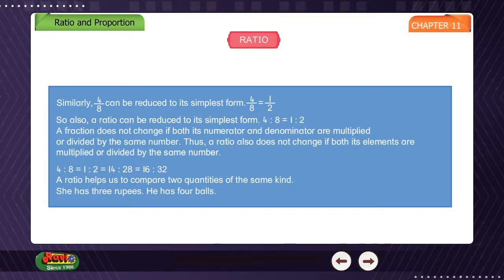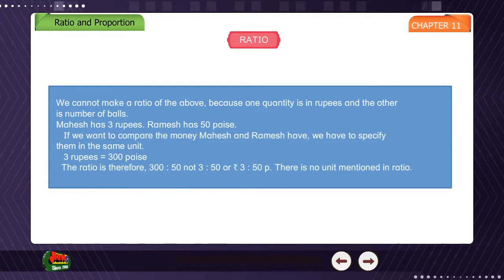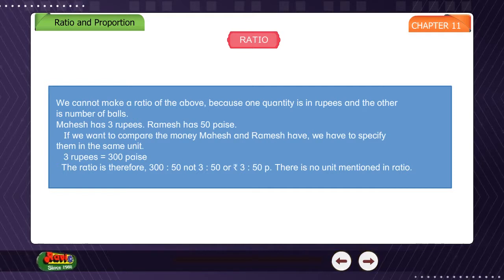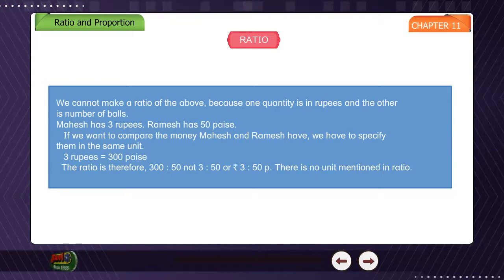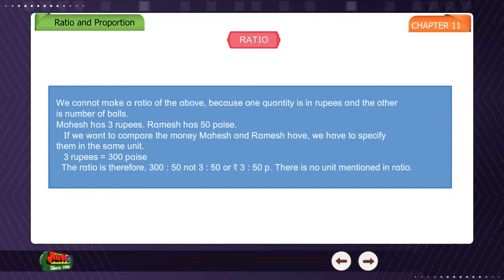We cannot make a ratio of rupees and number of balls because they are not of the same kind. For example, Mahesh has 3 rupees and Ramesh has 50 paise. If we want to compare the money they have, we have to specify them in the same unit. 3 rupees is equal to 300 paise, so the ratio is 300 is to 50, not 3 is to 50 or rupees 3 is to 50 paise. There is no unit mentioned in a ratio.